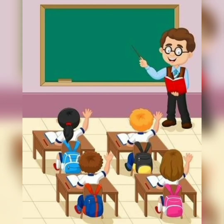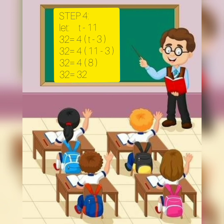Polya's method Step 4 is to look back, check, and interpret our answer. In order to check if our answer is correct, especially the age of Tom, we let t equal 11 and substitute it into Phil's age equation for three years ago.